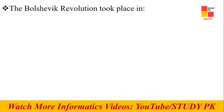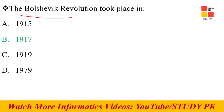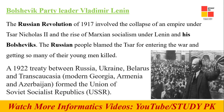Next question: The Bolshevik Revolution took place in which year? 1917 is the right answer. The Bolshevik Revolution took place in 1917 under the leadership of Bolshevik party leader Vladimir Lenin, who led a revolution to overthrow Tsar Nicholas II.